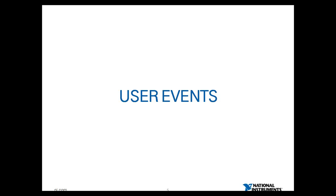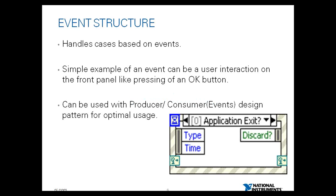User events are an extension of the same event structure studied in the last webcast. An event structure works like a case structure with a built-in wait-on notification function. It can have multiple cases, each a separate event handling routine, configurable to handle one or more events. When it executes, it waits until a configured event occurs and then executes the corresponding case. For example, multiple buttons on a user interface can each be programmed to run a particular set of code when pressed.